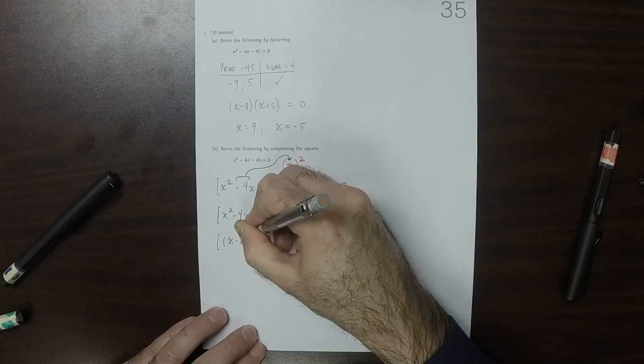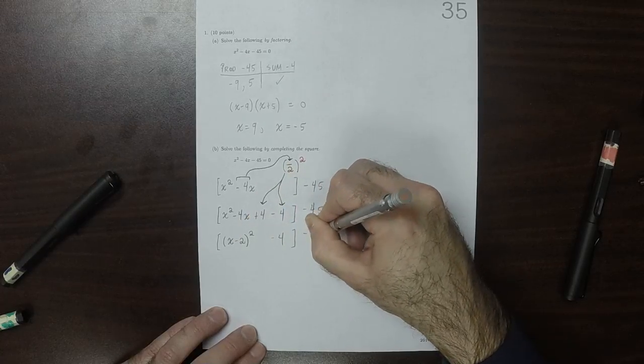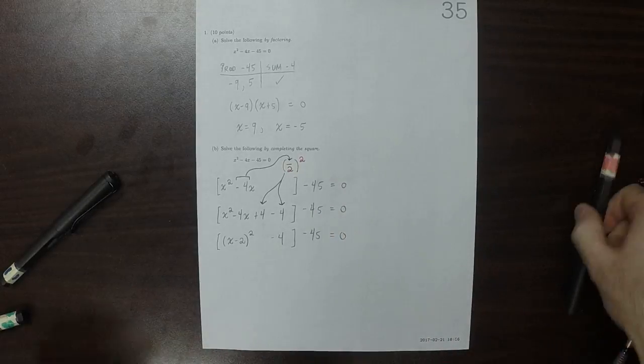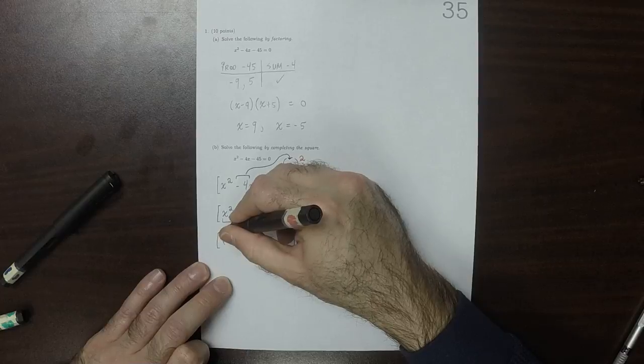So now these first three terms can be expressed as a square. So x minus 2 squared, and then minus 4, minus 45, equal to 0. These three terms becoming this.